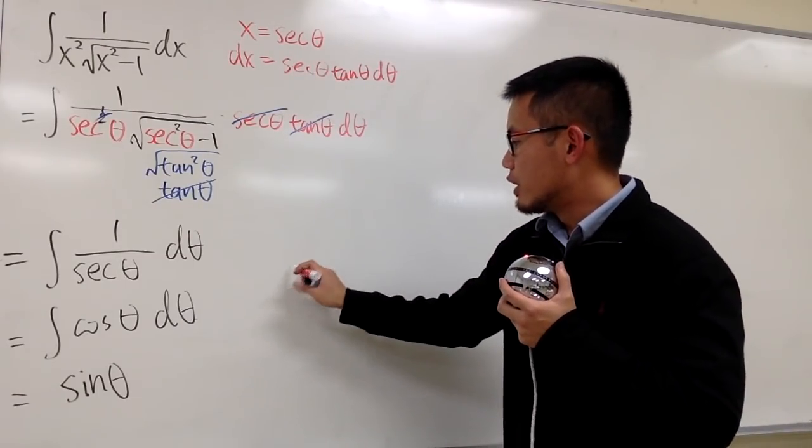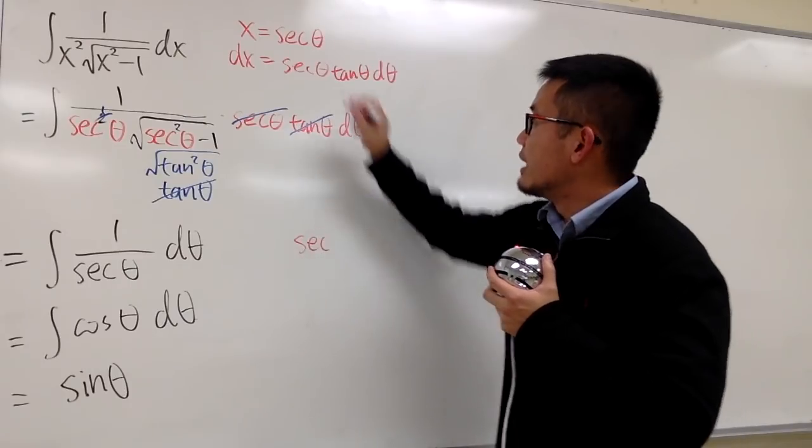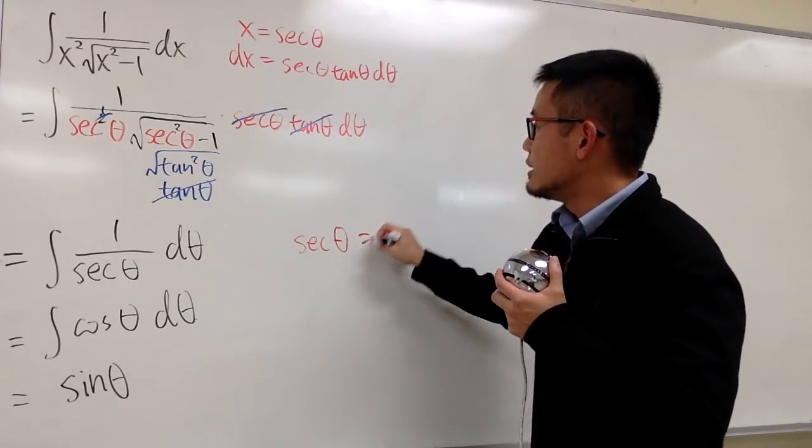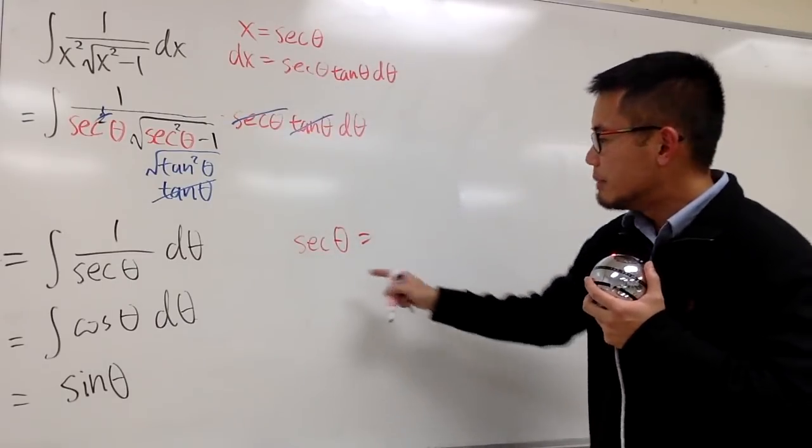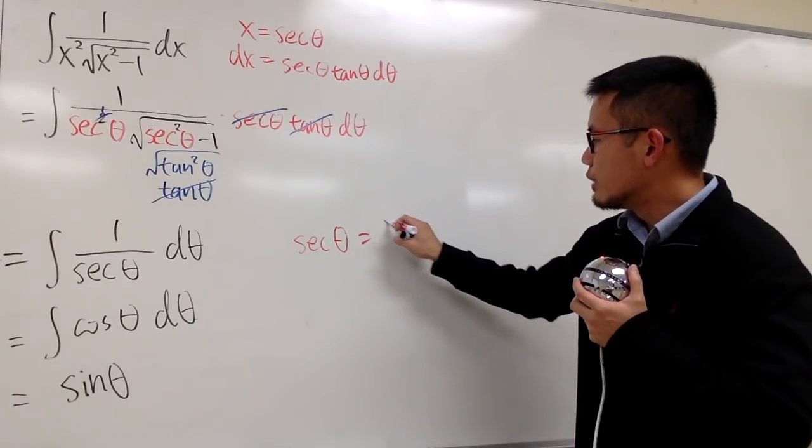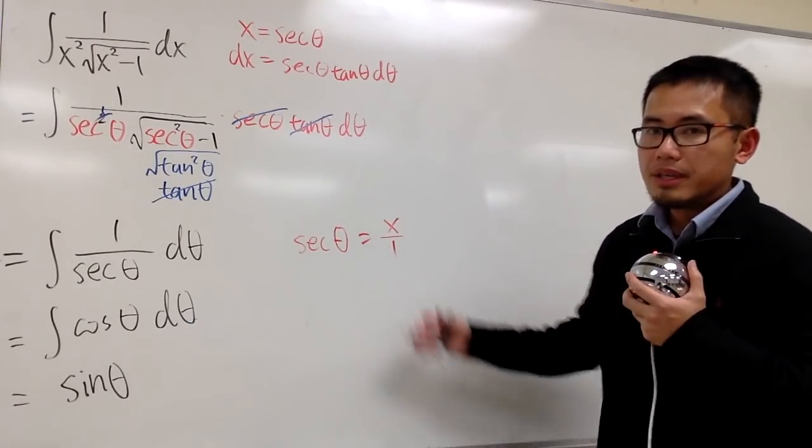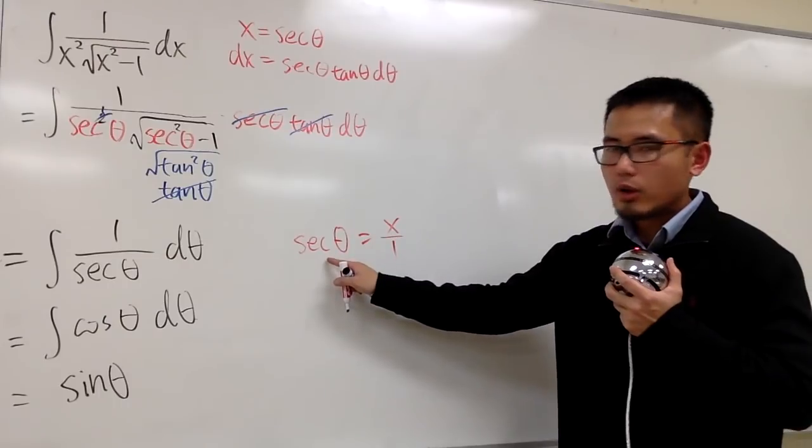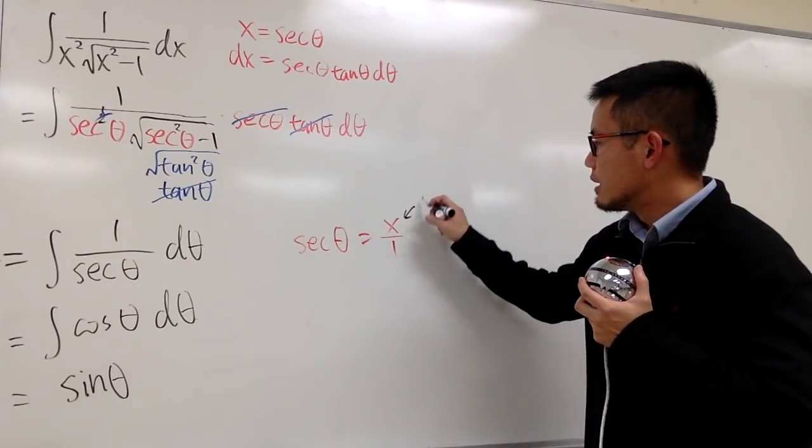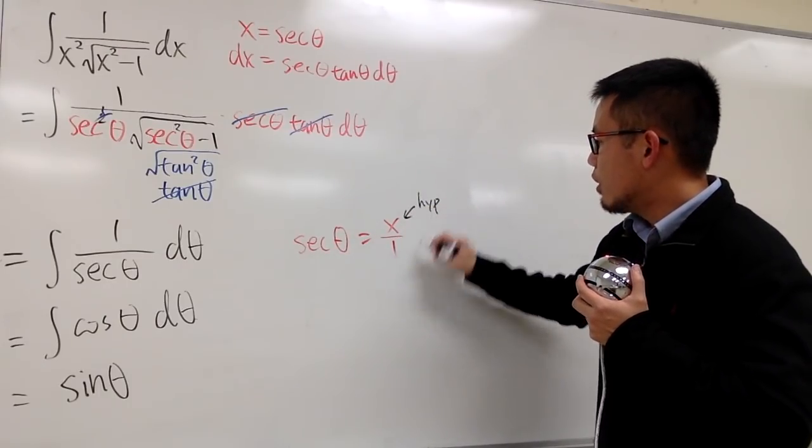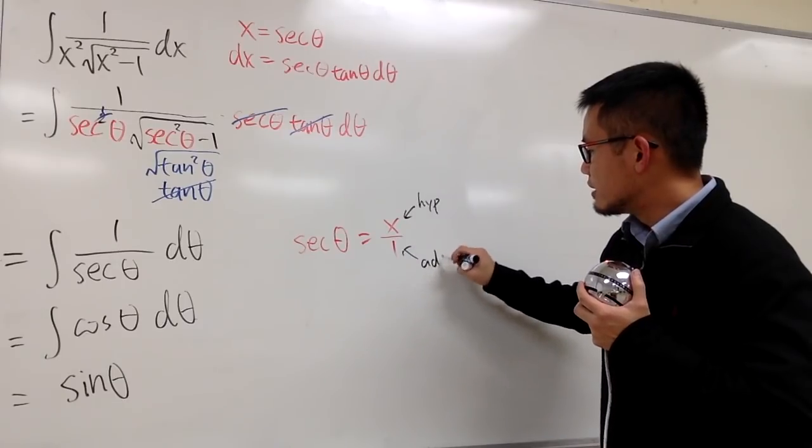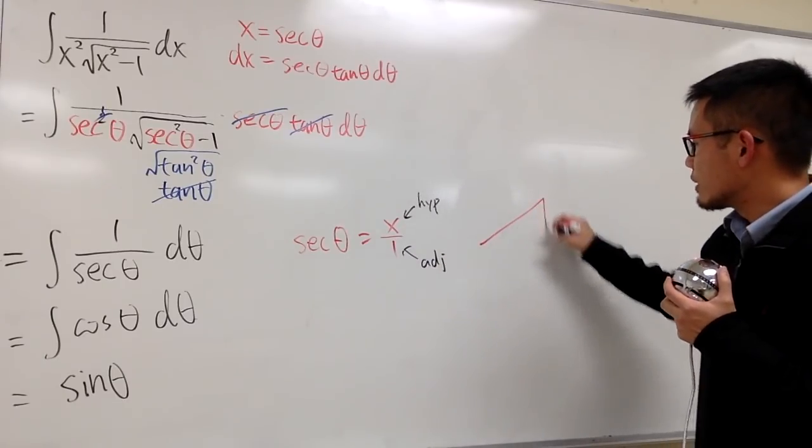So let me write this down right here. We know secant theta is equal to x. And let me just write this down as secant theta equals to x over 1. Because remember, in a right triangle, secant is the hypotenuse over the adjacent.